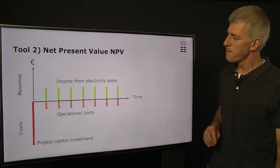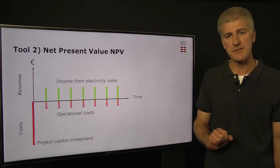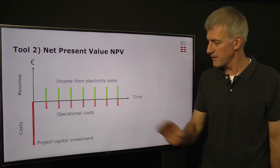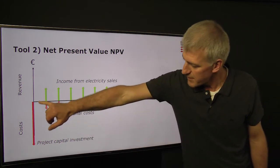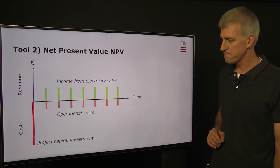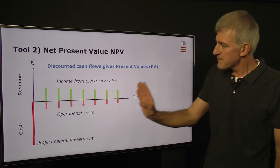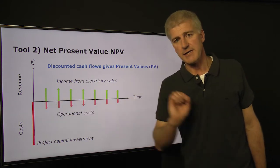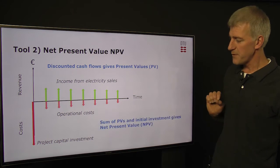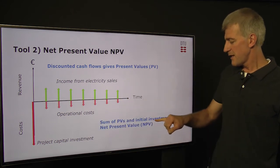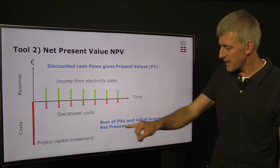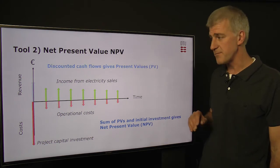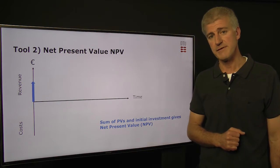Looking at this graphically, we have the income from electricity sales in each year of operation and the costs from maintenance and operation again for each year, and over here we have the original project capital investment. For each of these we need to discount them according to the year to bring them back to today's money. Then if we sum each of these up and subtract the original investment we get the net present value, or NPV. And hopefully, for this project, we get a positive NPV.